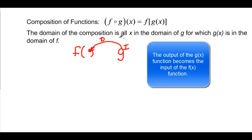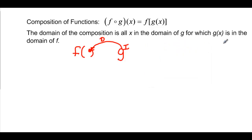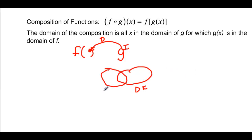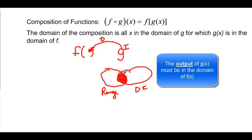The domain of the composition is all the x's in the domain of g for which g of x is in the domain of f. What that really means is: here's the domain of f, and g has some things that overlap with it. The range — the output — is going to be part of the input, specifically these overlapping values. So the output of g has to be part of the input of f. This is the range of g.